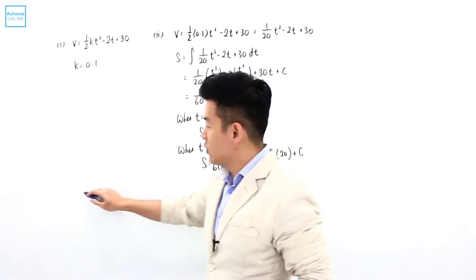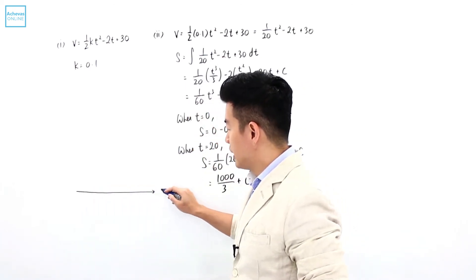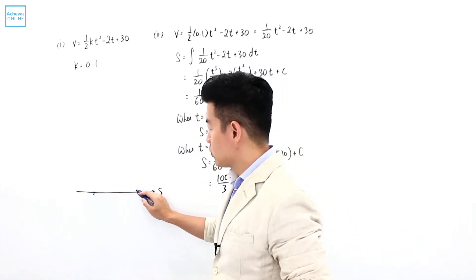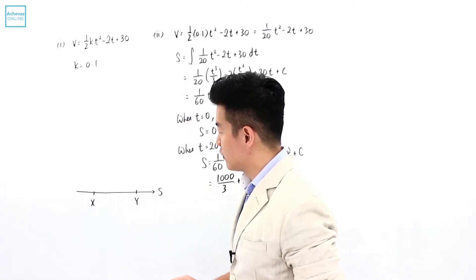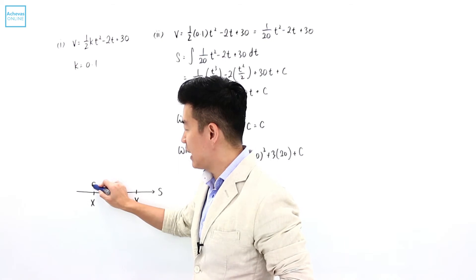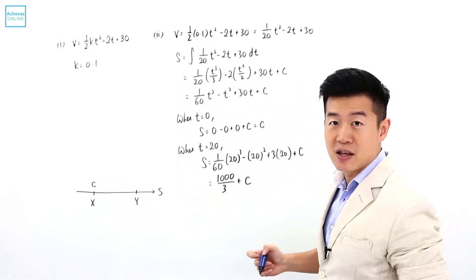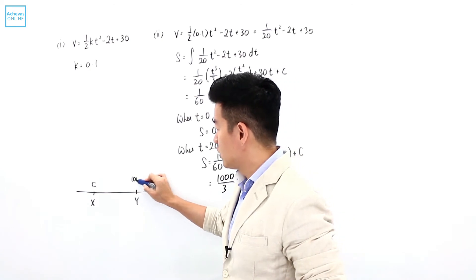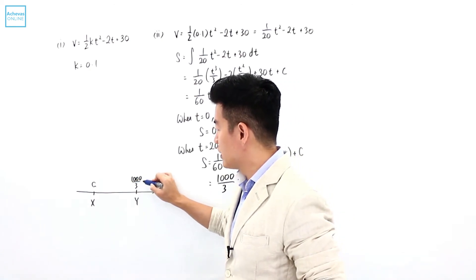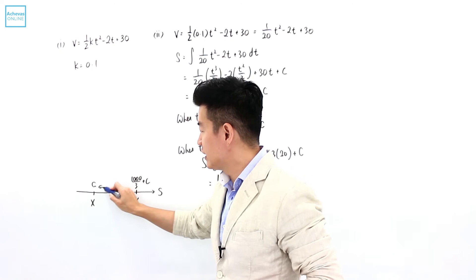Which means that the train which travels from x to y, from the position of x to the position of y, when it is at x, s is c. When it is at y, s is 1,000 over 3 plus c. So to find this distance here,